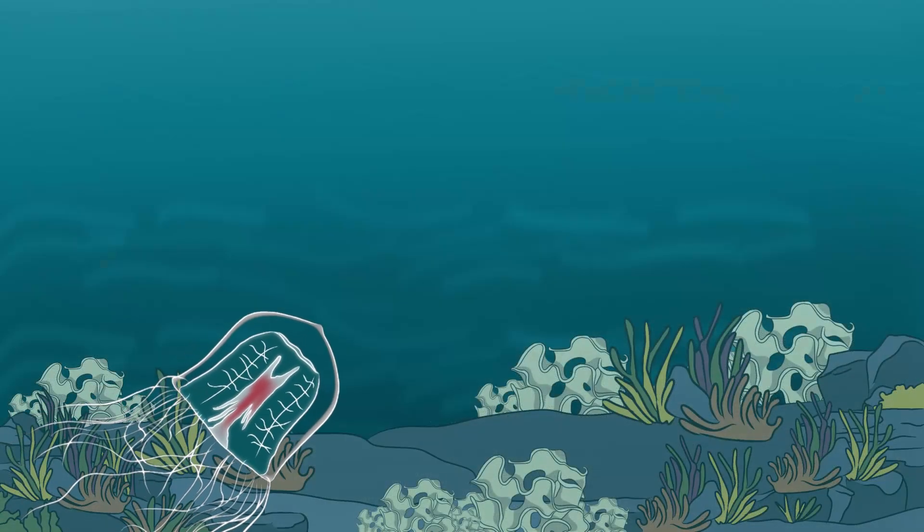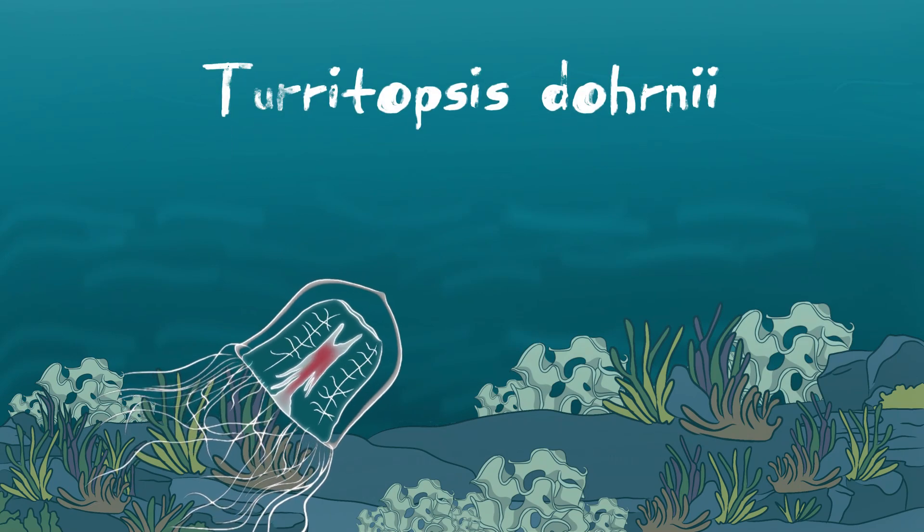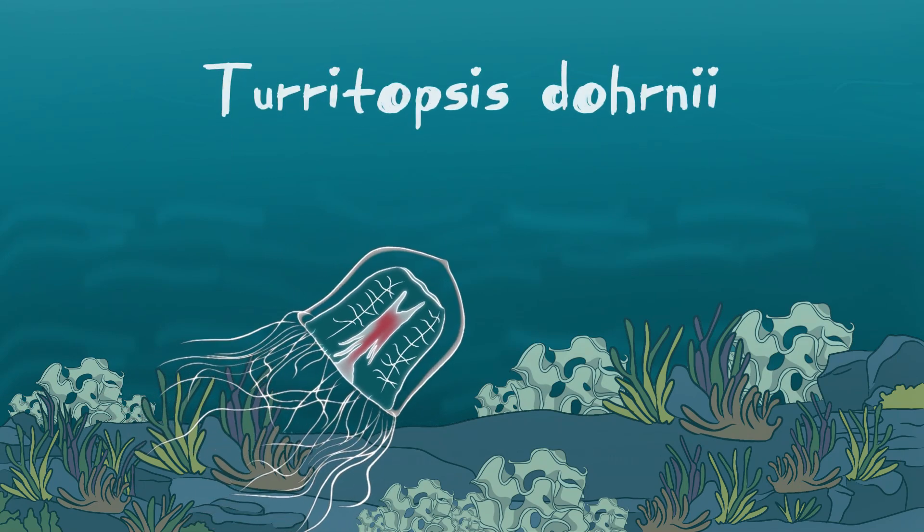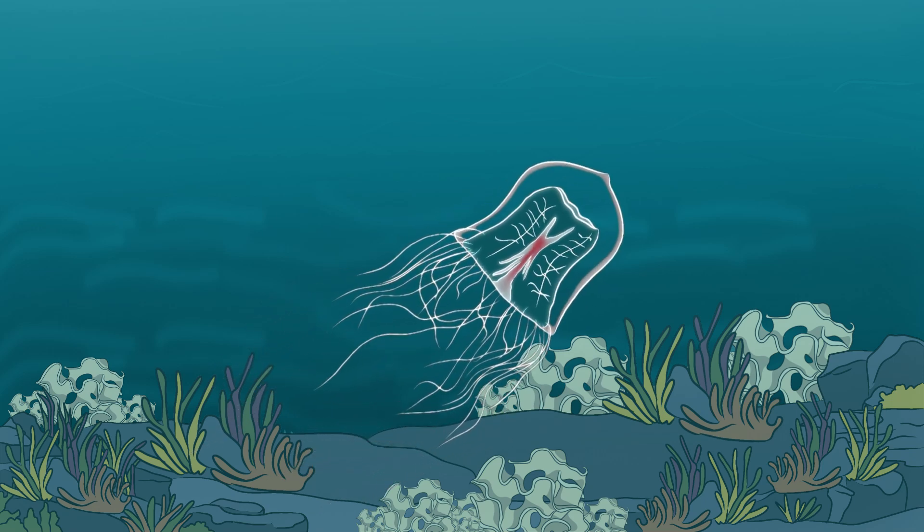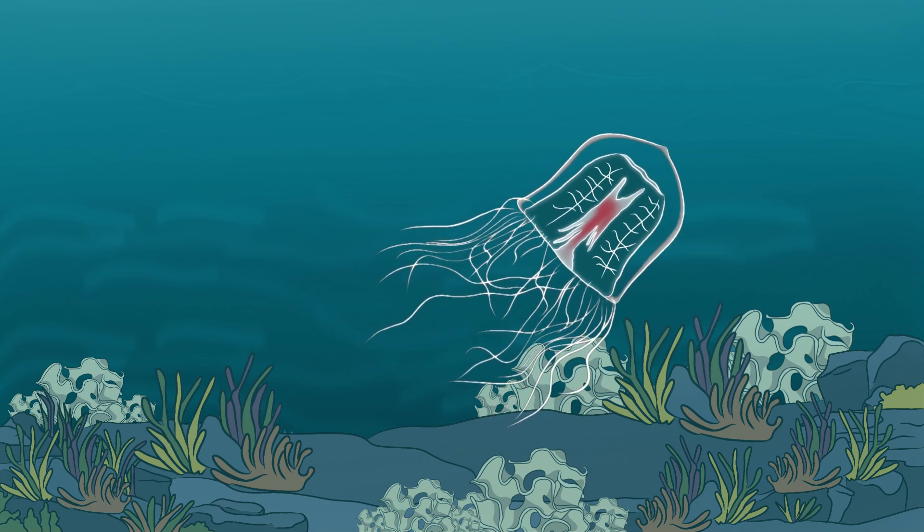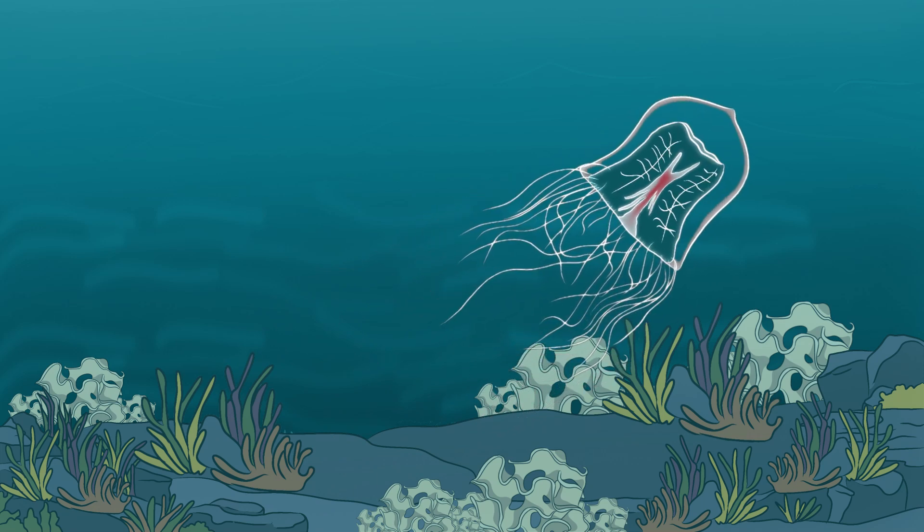The immortal jellyfish with a scientific name Turritopsis dornii is a tiny jellyfish which is no bigger than a fingernail. It may look fragile, but this creature holds an incredible secret — one that defies the rules of life and death.